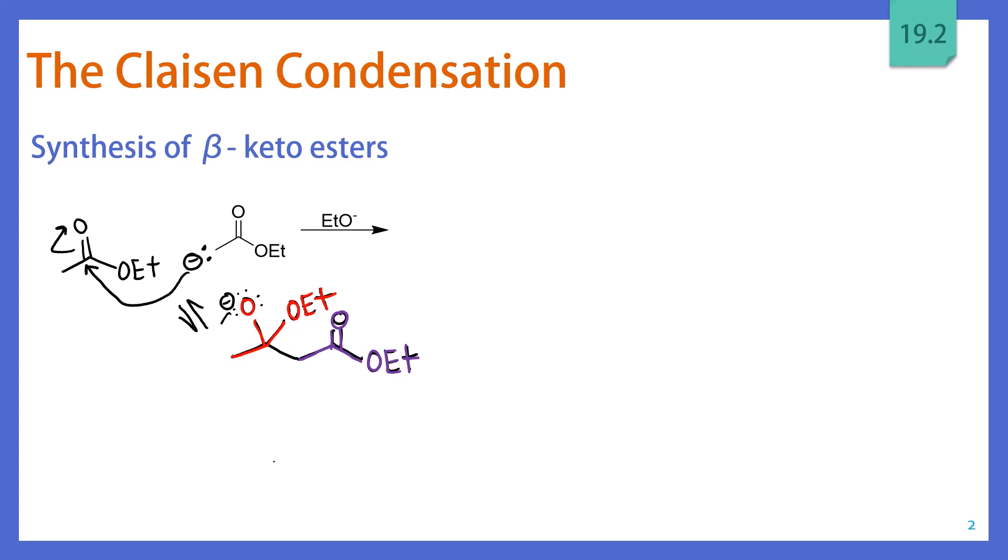So this oxygen is going to want to reform its double bond, which will let it kick out an equivalent of ethoxide, which brings us to our beta-ketoester. But that actually isn't where this reaction stops. The driving force of the Claisen condensation is actually the formation of ethanol.